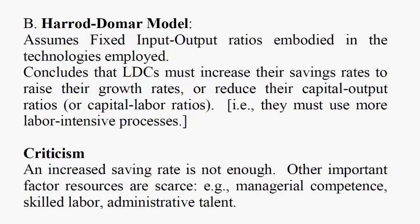The next theory is the Harrod-Domar model. It assumes fixed input-output ratios embodied in technologies. The Harrod-Domar model concludes that developing countries must increase their savings rates in order to increase their capital stock and therefore increase their capital-labor ratios, causing an increase in economic growth. Or they must reduce their capital-output ratios and use more labor-intensive processes. Countries must figure out whether to use a more labor-intensive or capital-intensive process to develop, and then move in that particular direction.